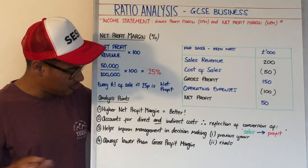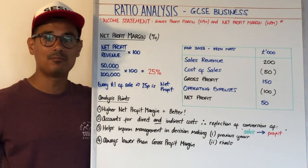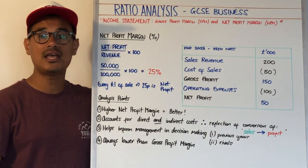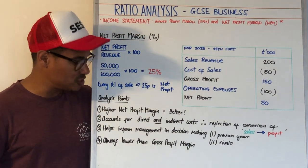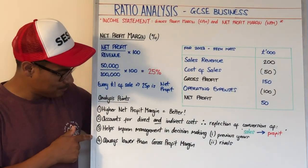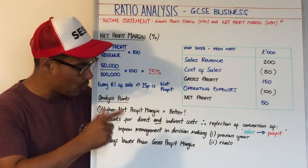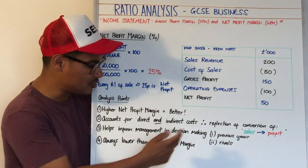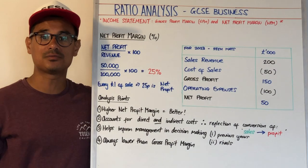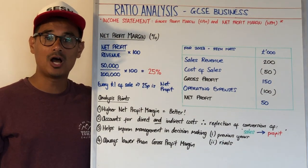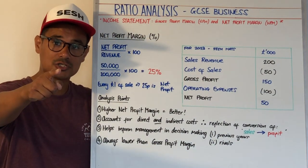Number three is that it helps inform management in decision making — that could be compared to previous years or to rivals within the industry you operate within. And number four is it's likely to always be lower than the gross profit margin, simply because it's further down the income statement. I hope that helps and I'll see you at the next Sesh.